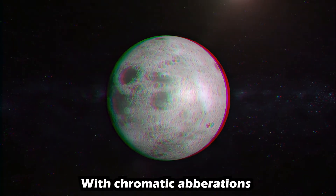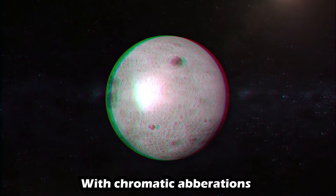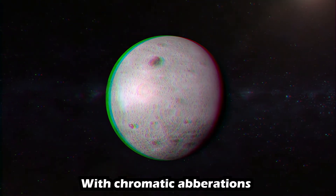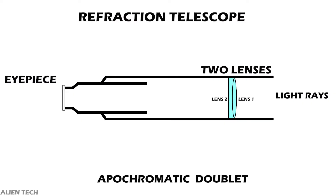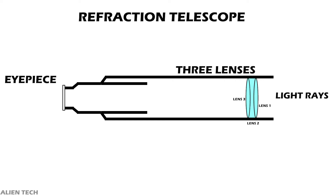Chromatic aberration can be overcome by adding one more lens — this combination is known as an apochromatic doublet. You can still get some aberrations after adding a second lens, so to correct this a third lens is added. This type of telescope is called an apochromatic triplet. The second type of telescope is the reflector telescope.